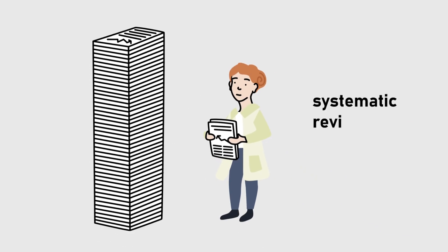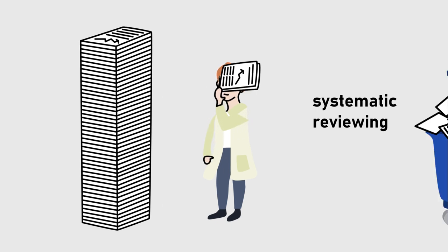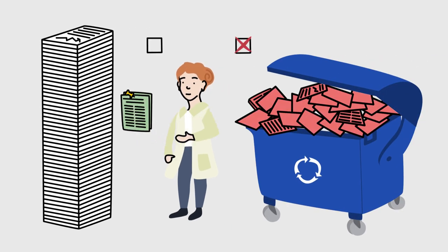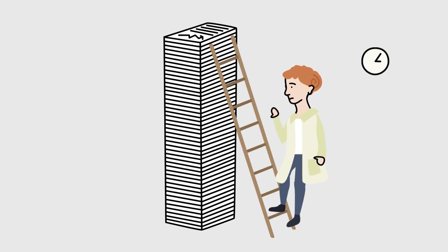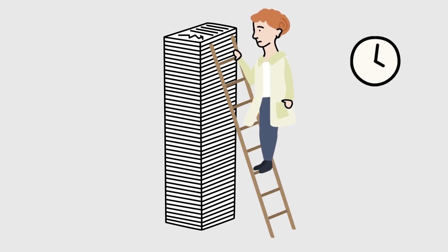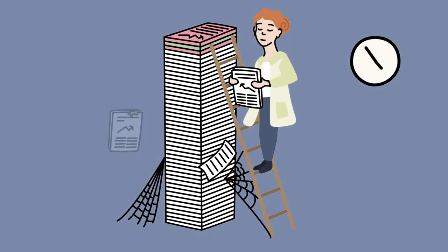This is called systematic reviewing. Most results are irrelevant, but you don't want to miss the few relevant ones either. If you start at the top and work your way to the bottom, reading through all the documents could take weeks, or even months.